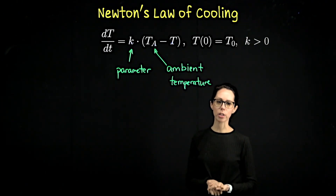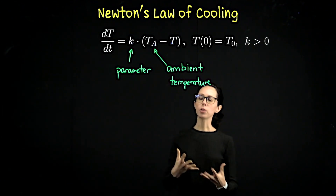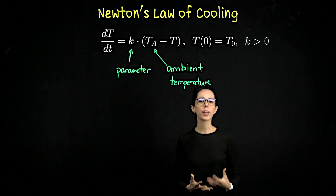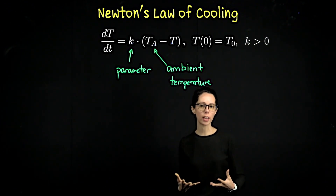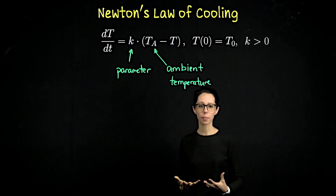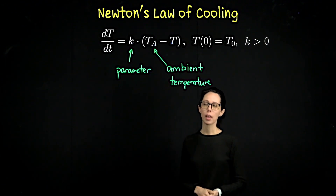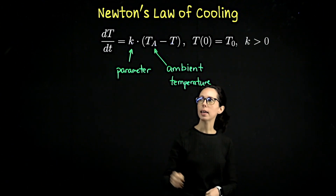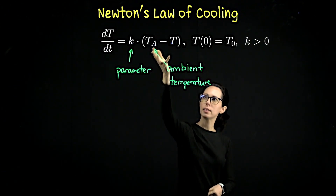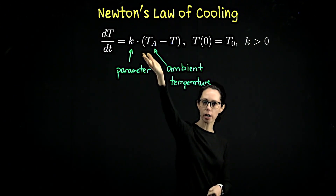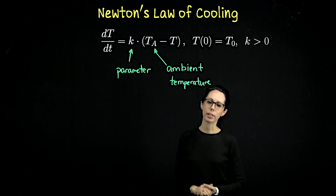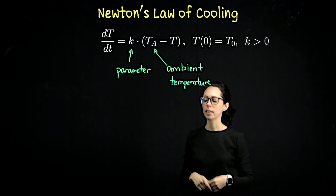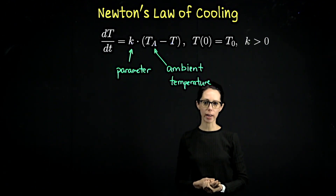Let's talk through this differential equation a little more. Suppose you have a cup of coffee in the morning — it's very hot, but your kitchen is much cooler than the coffee, so the coffee is going to cool down. The rate of change of the coffee's temperature with respect to time is proportional to the difference between the room temperature and your current coffee temperature. It usually makes sense to have an initial condition, like the temperature of your coffee the moment you pour it.